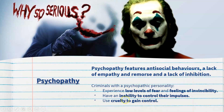The main criteria for criminals with psychopathic tendencies: they experience a low level of fear and feelings of invincibility — they feel that no one can touch them. They have an inability to control their impulses, so they are very quick to act and have low impulse control. And they use cruelty to gain control from others — psychologically, mentally, physically or sexually.